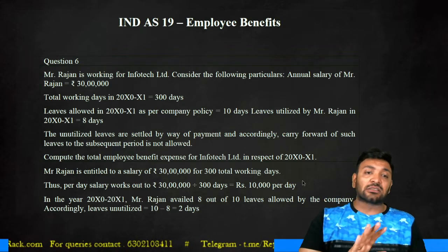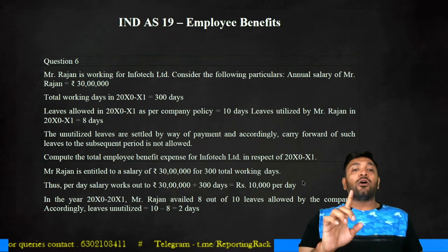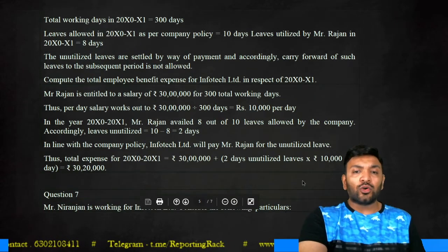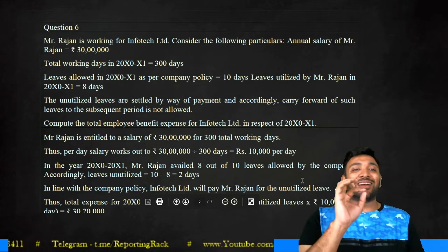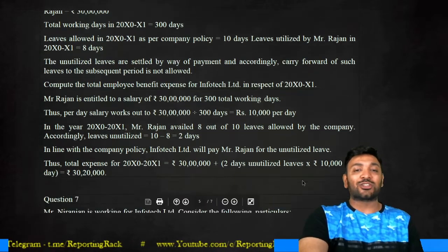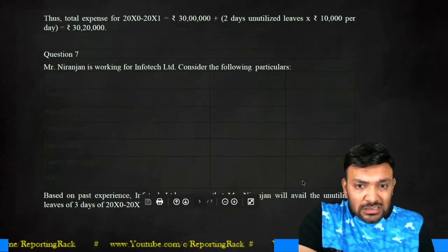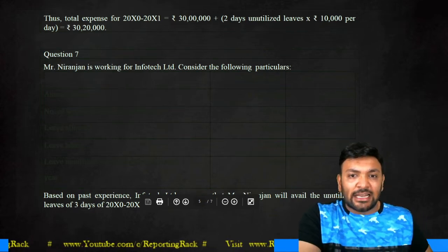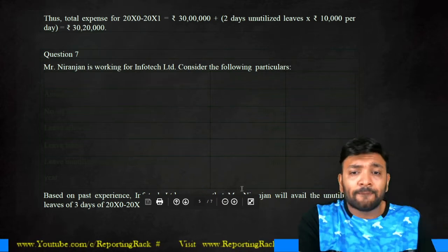The total staff cost or employee benefit expense is 30 lakhs salary plus 20,000 provision for accumulating short-term compensated absences, giving a total of 30 lakh 20,000. The salary per day is 10,000 (30 lakhs ÷ 300 days), and the provision for two days is 20,000.